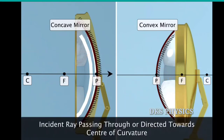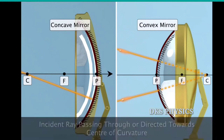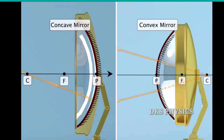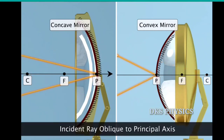An incident ray passing through or directed towards the center of curvature is reflected along the same path. A ray that is obliquely incident on the principal axis will be reflected at an equal angle but on the opposite side of the principal axis.